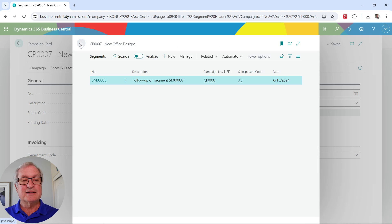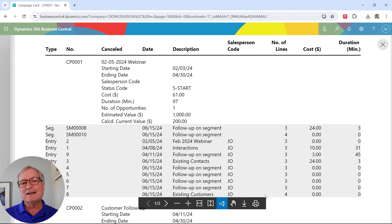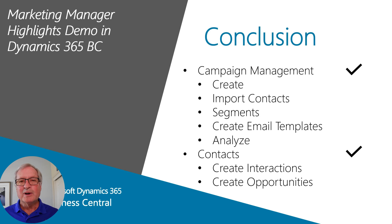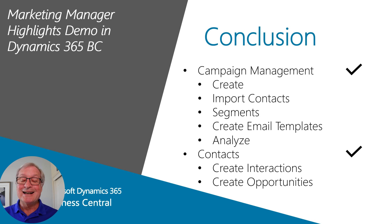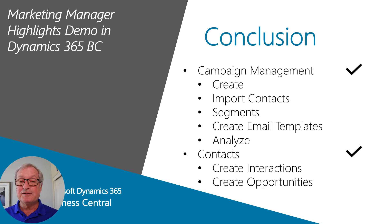If we go back to this campaign, there's a report we can look at. This shows all the activity on the campaigns in my system at this time — there's a lot of detail, including the dates everything happened, and here's a segment we were just working with. What I showed you in this demo was how a marketing manager might use Dynamics 365 Business Central: campaigns, importing contacts, working with segments or groups of customers and contacts, creating email templates, creating interactions via email, and creating opportunities from a segment.